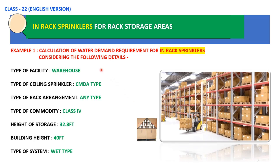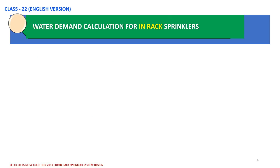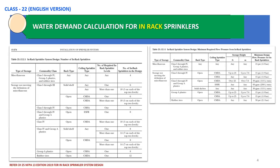Coming back to our example, the type of facility is a warehouse. CMDA type sprinklers are installed here, and rack sprinklers are also installed in this particular warehouse. We are going to calculate the water demand based on storage height and type of commodity classification. There are two tables extracted from NFPA 13 Chapter 25, 2019 edition.